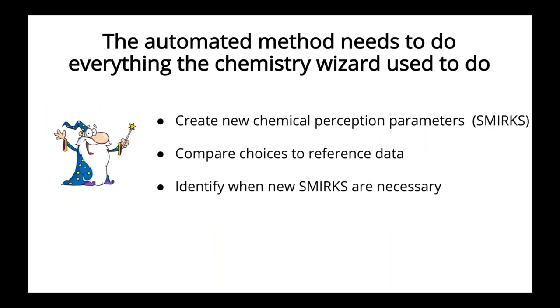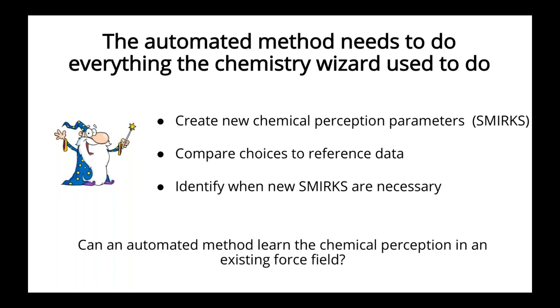Okay, so the thought process on this is we would like a piece of software to be able to do the same things that our chemistry wizard would do. So it needs to know how to create new SMIRNOFF patterns, it needs to be able to make some kind of comparable choice with reference data, and it needs to be able to identify when a new SMIRNOFF pattern is necessary. So we don't want to just add a new parameter for every single molecule we give it if we want a general small molecule force field. So as a starting point for this, the question we asked is, can an automated method learn the chemical perception from it in an existing force field? So instead of using reference experimental or quantum data, we're going to use an existing force field as our reference data and say, can we make an automated method that comes up with the same types of chemistry?